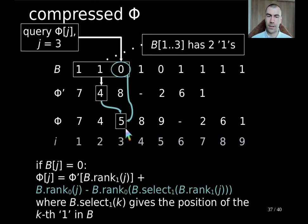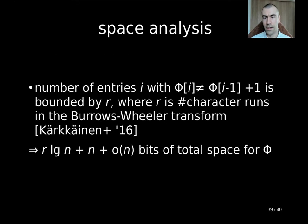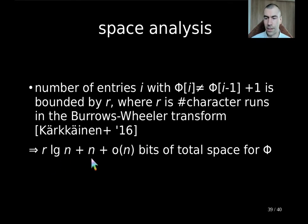The next question is, how can we do rank and select? That's easy: we just compute the rank-select data structure upon our bit vector B, which takes linear time in the construction, but it can answer rank and select queries in constant time. It uses n plus smaller order of n bits of space, including the bit vector B. Together with that, we come to the final space analysis: the number of entries that do not exhibit this nice compression property can be bounded by r, where r is the number of character runs in the Burrows-Wheeler transform. This is a result due to Kärkkäinen and others. So we get a final space of r log n plus n plus small order of n bits of total space for our compressed phi representation.